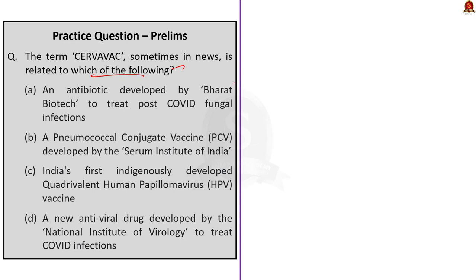Four options are given. Option A: an antibiotic developed by Bharat Biotech to treat post-COVID fungal infections. Option B: a pneumococcal conjugate vaccine developed by the Serum Institute of India. Option C: India's first indigenously developed human papillomavirus vaccine. Option D: a new antiviral drug developed by the National Institute of Virology to treat COVID infections. The correct answer is Option C — India's first indigenously developed quadrivalent human papillomavirus vaccine.